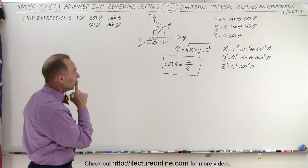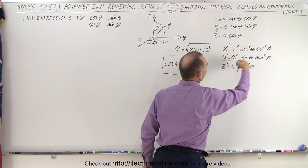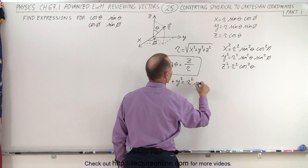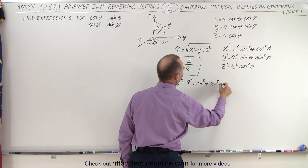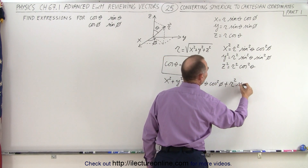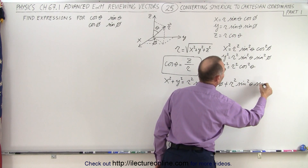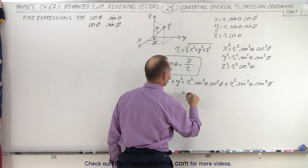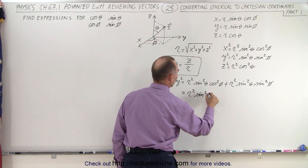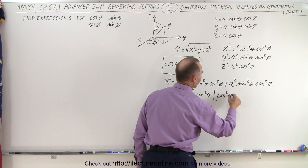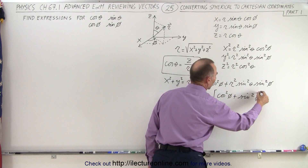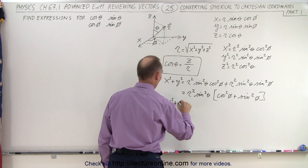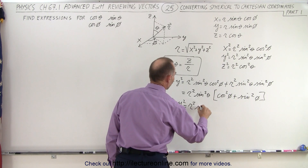Now let's define the sine of theta. We start with x squared plus y squared, which equals r squared times sine squared theta times cosine squared phi, plus r squared times sine squared theta times sine squared phi. On the right side we can factor out r squared and sine squared theta, giving r squared times sine squared theta times (cosine squared phi plus sine squared phi), which equals r squared times sine squared theta.